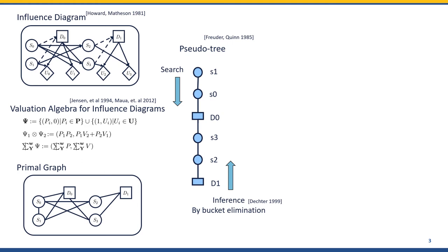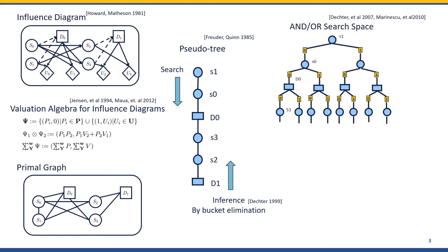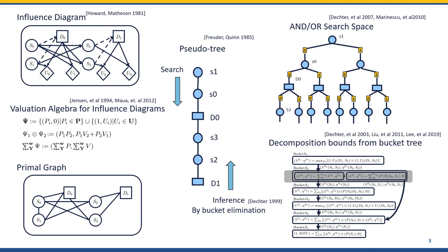The imprecision assumption in inference diagrams is that the agent never forgets the history, and the constraint ordering reflects such property. From the primal graph, we can derive a pseudo-tree consistent to the constraint ordering. In this figure, the top-down order is consistent to search ordering that can be instantiated as an AND/OR search space. And the bottom-up order is consistent to inference, which also instantiates exact variable elimination schemes or approximation schemes such as weighted mini-bucket bounds that provide upper bounds or admissible heuristics.